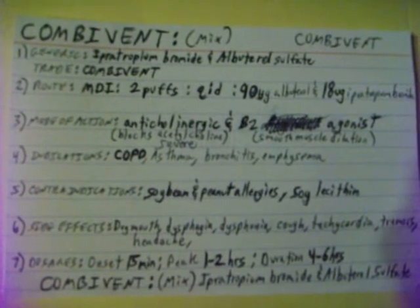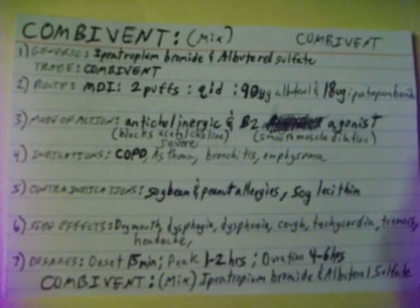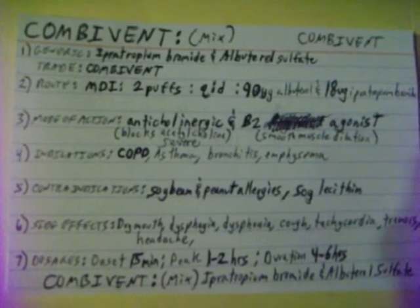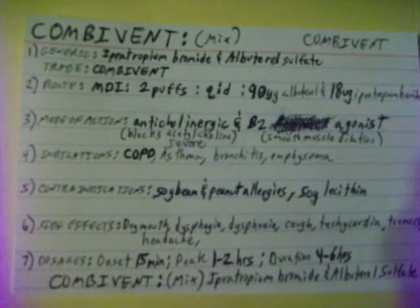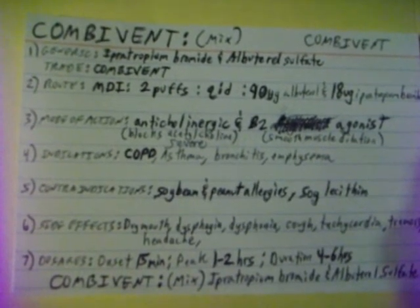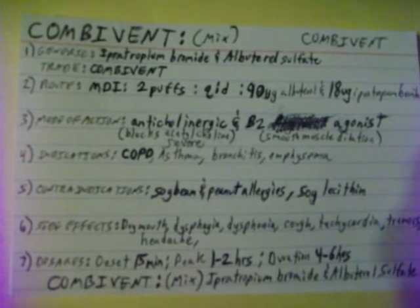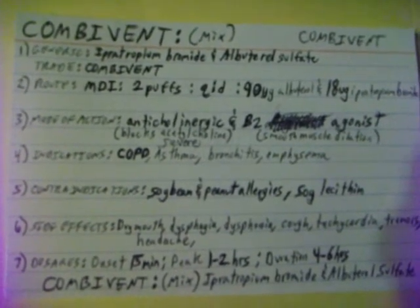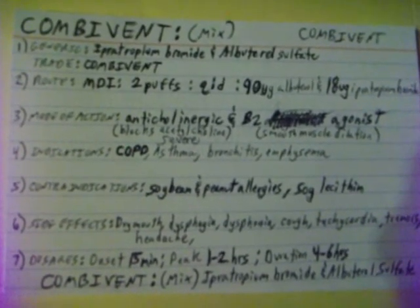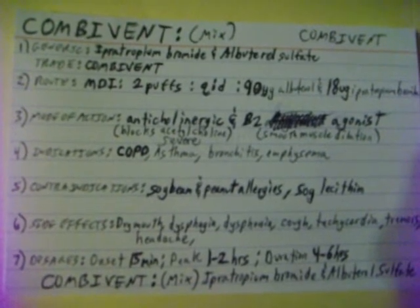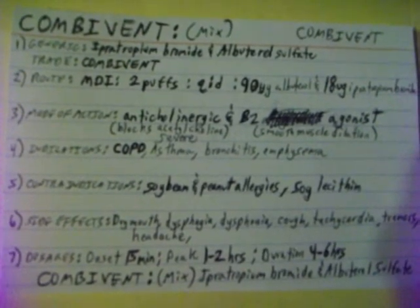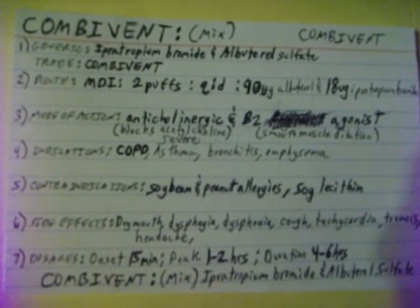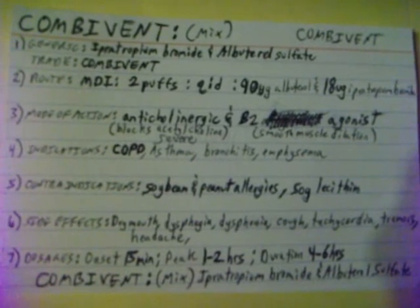Indications for Combivent are COPD, severe asthma, bronchitis, and emphysema. Contraindications: Combivent should not be given to patients with soybean and peanut allergies.